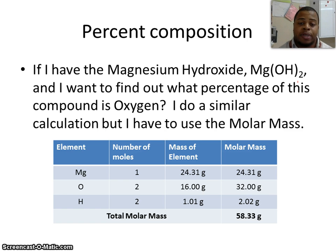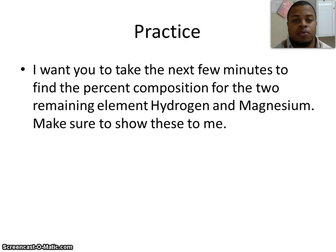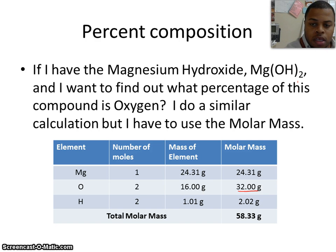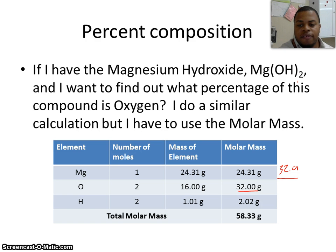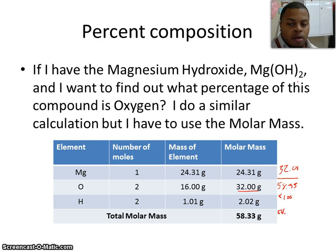Now to get the percent composition, especially to answer the question in terms of oxygen, I need to take the part — which is going to be my mass of oxygen — and divide it by the whole, which is my 58.33. So if I take my 32 grams and divide it by my 58.33, then take that value and multiply it by 100, I find out that oxygen accounts for 54.86% of my total mass. The general idea remains the same: part divided by whole, multiplied by 100 — this gives us our percent composition.